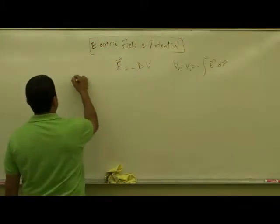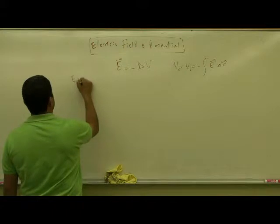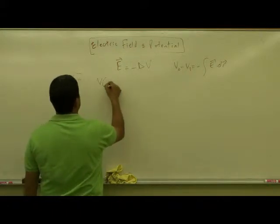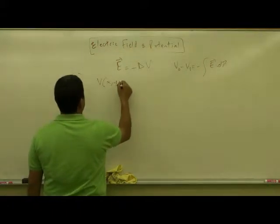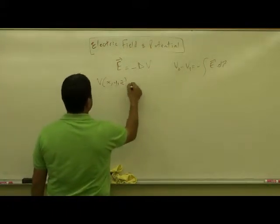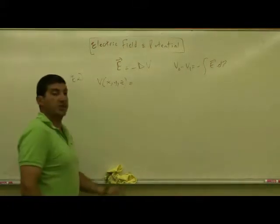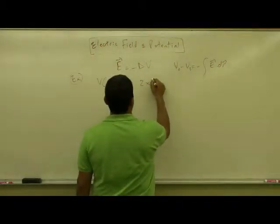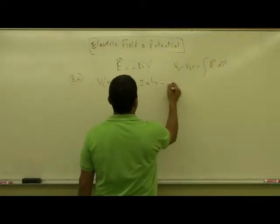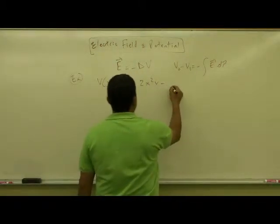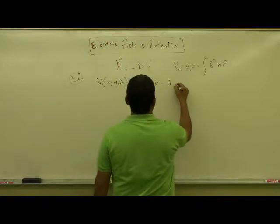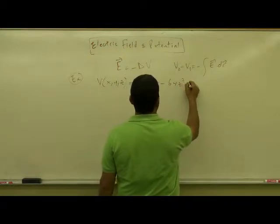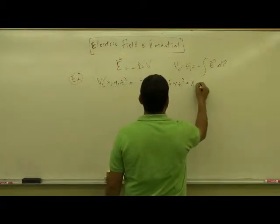We can have something like this potential as a function of x, y, z — a three-dimensional problem. For example: V = 2x²y − 6yz² + 8z.